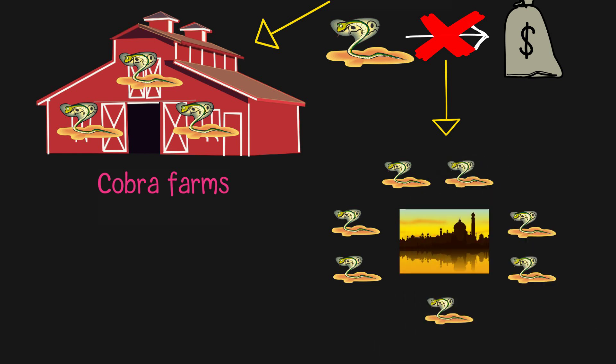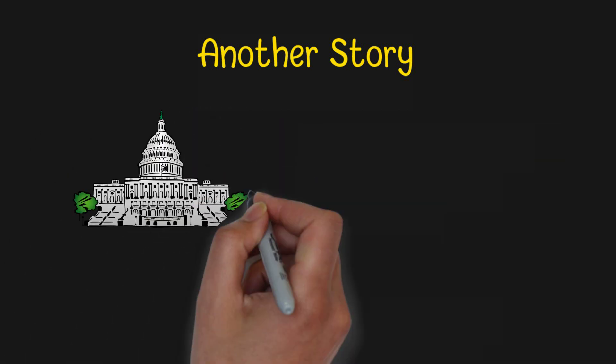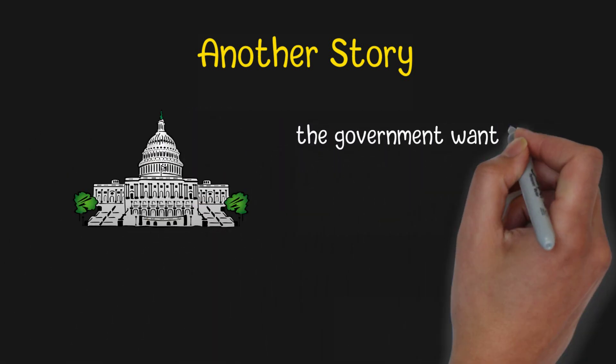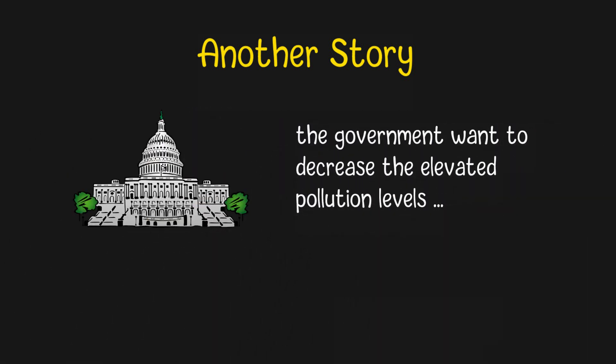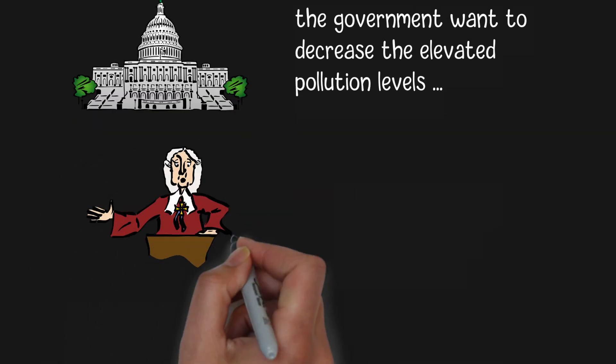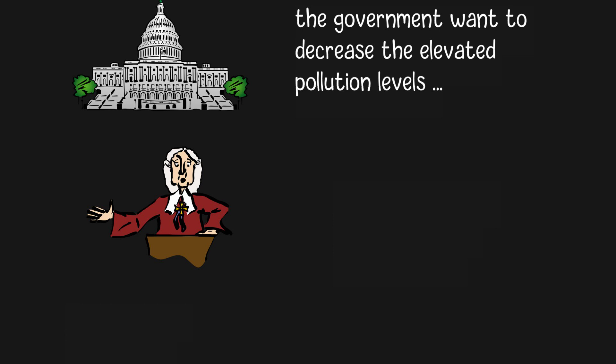Apart from the cobra story, we may also see other examples related to this effect in our daily life. For example, in a city, the government was actively seeking a solution to decrease the elevated pollution levels primarily driven by excessive traffic. So the lawmakers may have a simple goal: they aim to reduce the volume of cars on the roads.